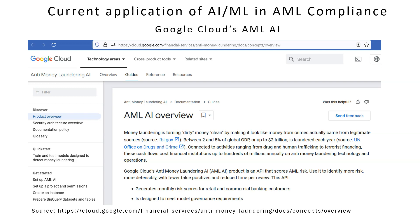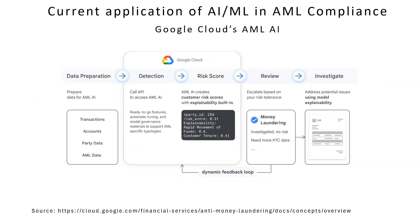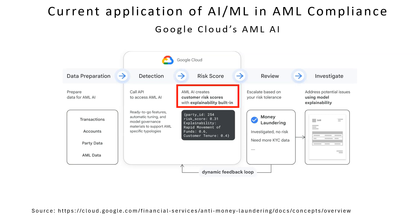Instead, it uses machine learning to detect money laundering using a holistic view of customer data. It is an API which can be integrated in the bank's backend software. It is a model that learns automatically from various customer data provided to it by the bank, like KYC, transactions, etc., and combines this with previously identified risk events to give a holistic risk score for the compliance team to review.